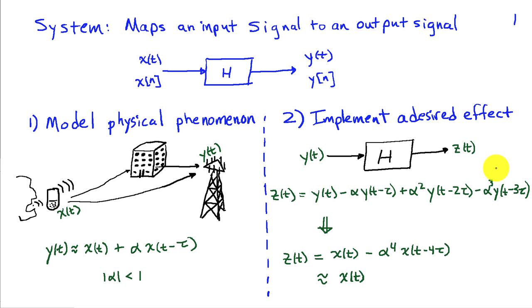If we want to implement a desired effect, then we're going to take a signal y of t, put it through some system which does some computation or manipulation to get an output signal z of t. What I'm going to try to do here is see if we can get rid of some of the effects of this echo in our transmission to the base station from the cell phone.